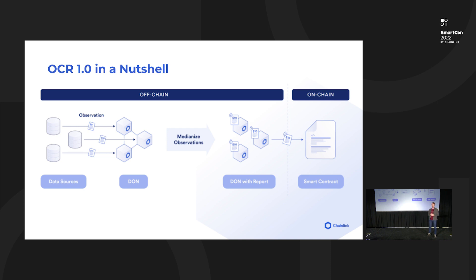OCR 1 is ultimately a distributed system with major components: the oracles comprising the Decentralized Oracle Network (DON), the blockchain on which the smart contract runs, and some data sources that the oracles observe. The goal of the system is to reliably and securely report periodically the price of some asset like Ether.